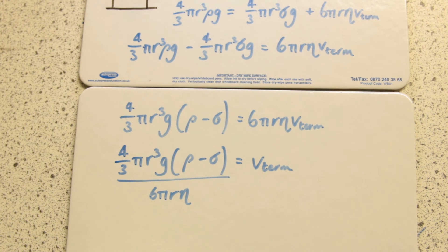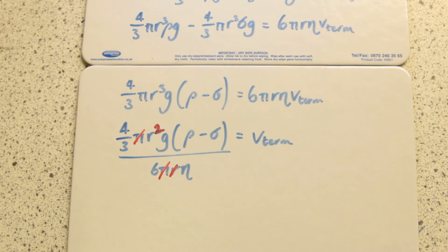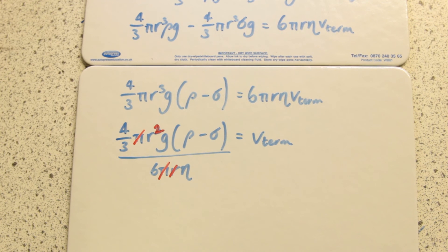Now I'm going to do a bit of cancelling. I'm just going to simplify the fraction. The 3 from the 4/3 goes on to the bottom line, times that by 6 is 18, so it's 4 over 18 which simplifies to 2 over 9.